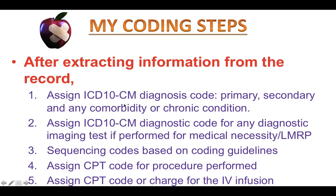Each coder will have their own way of coding any record, and I don't think school will teach you this. These are my own steps that I want to share with you based on my own experience, so that you can code any record effectively and completely. After extracting the information from the history, examination, and medical decision-making section, the first step is to assign the ICD-10 diagnosis codes for the primary and secondary diagnoses, and any comorbidity or chronic condition that the patient has and that we need to monitor or treat.